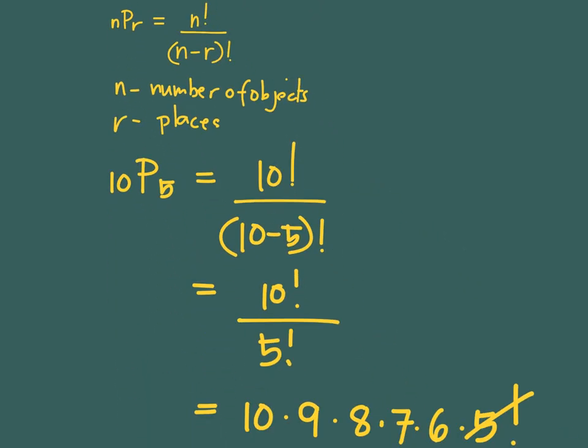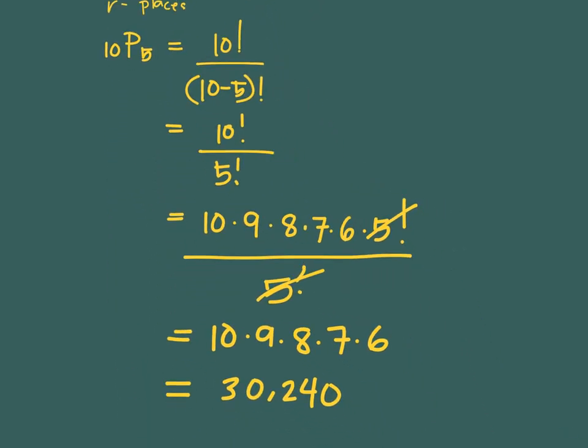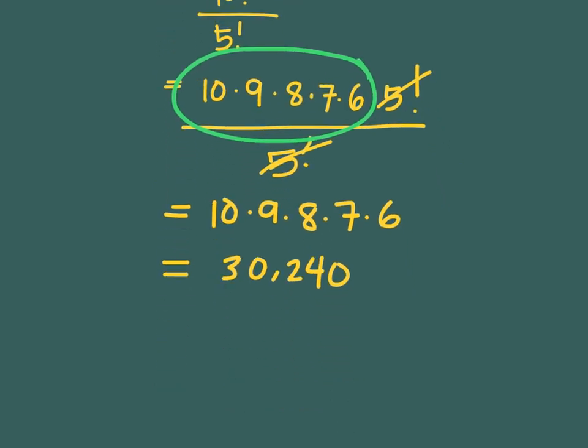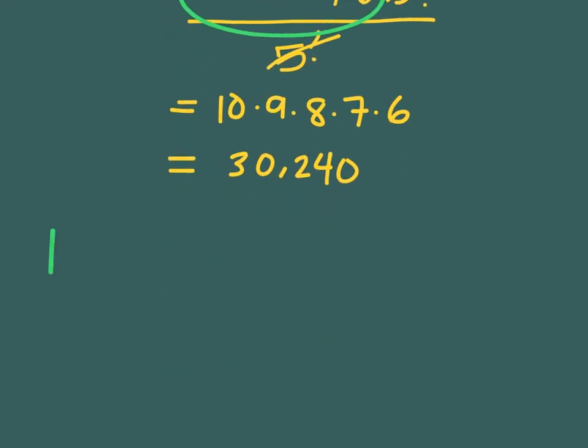Just to give you more insights about this permutation idea, if you take a look at what we obtained when we simplified 10 factorial over 5 factorial, it became 10 times 9 times 8 times 7 times 6. Permutation can be viewed in this way as well. Remember that from 10 objects we could only place 5 books on the shelf.